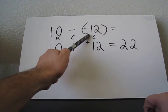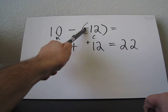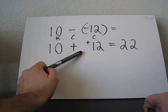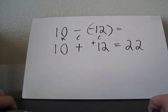since there's a C under it, to change it, changes from a negative 12 to a positive 12. 10 good guys plus 12 good guys is going to equal 22 good guys.